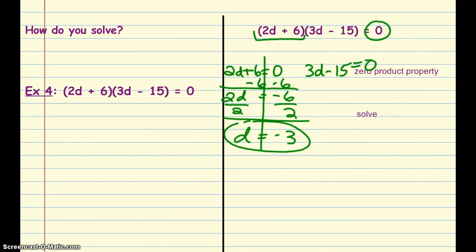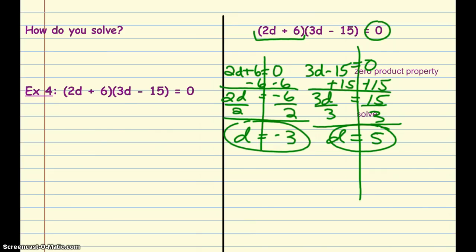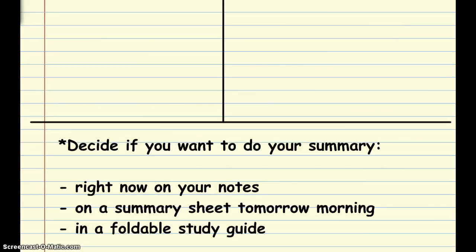And then with the second one, I'm going to add 15 to both sides. So I have 3D is equal to 15. And then my last step is to divide by 3. So I get D equals 5. So what we have found out here is that either negative 3 or 5 can be substituted into this equation to figure out what would give this equation a value of 0. So last slide. It has to do with your summary. So take a minute and write your summary about what you learned with this particular lesson. Have a great day.